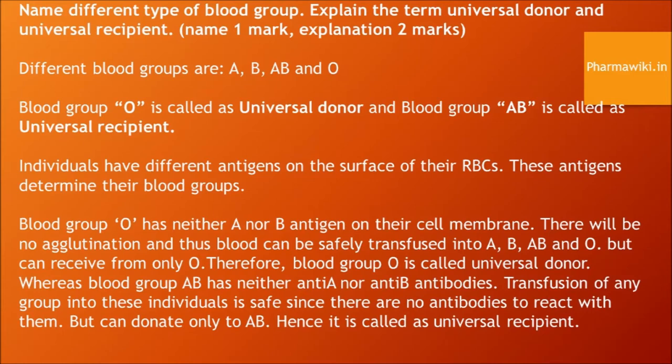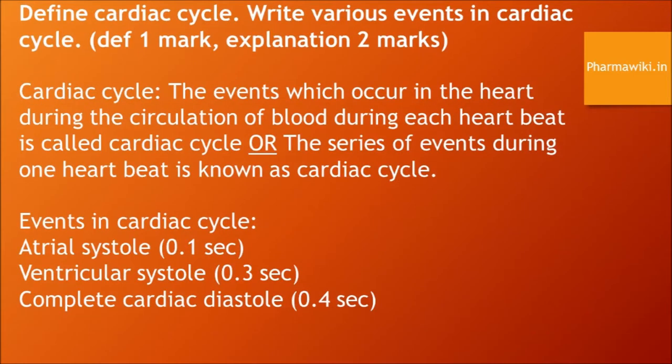Define cardiac cycle and write the various events in the cardiac cycle. The events which occur in the heart during the circulation of blood during each heartbeat is called the cardiac cycle. The series of events during one heartbeat is also known as the cardiac cycle. The events in the cardiac cycle are: atrial systole (0.1 seconds), ventricular systole (0.3 seconds), and complete cardiac diastole (0.4 seconds).